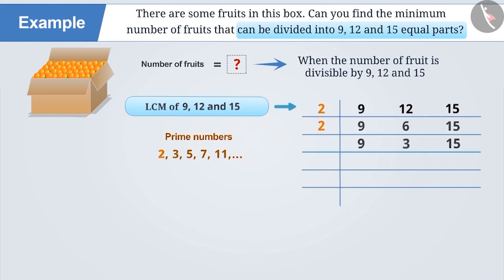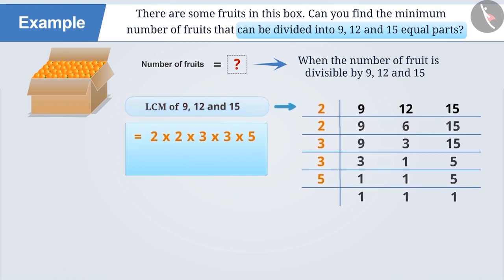The next smallest prime number to divide them is 3. Because the numbers 9, 3 and 15 are not divisible by 2, we will continue the process till we get 1, 1, 1 in the same row. In order to find the LCM of 9, 12 and 15, multiply these prime numbers to get 180.